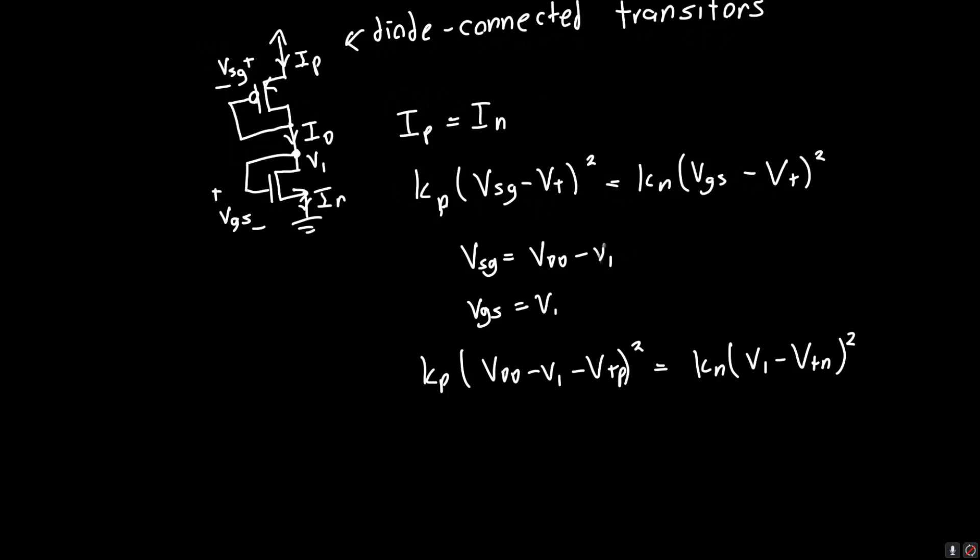But you'll only get two answers. V1 is equal to some value, and V1 is equal to some other value. And one of them will be nonsensical because it will be negative. And the other one will make sense. But the point is that you'll get V1 is equal to some constant answer. So V1 won't be a function of time. This is a static circuit.